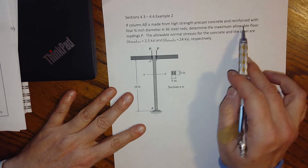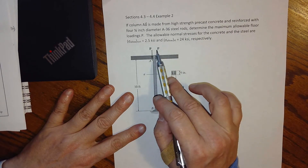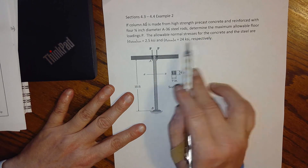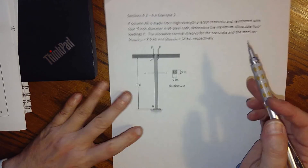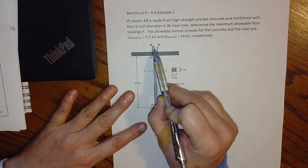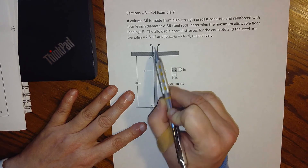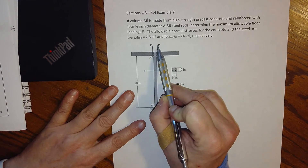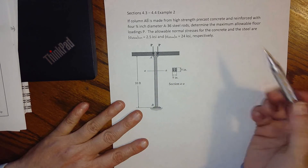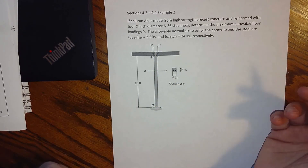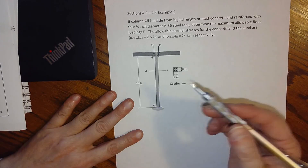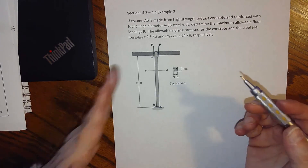Determine the maximum allowable floor loading P. The allowable normal stresses for the concrete and the steel are given. This time we don't know what P is — we have to determine that. We have determined loads before in chapter four where it wasn't indeterminate, but we still had to go through the different failure modes.